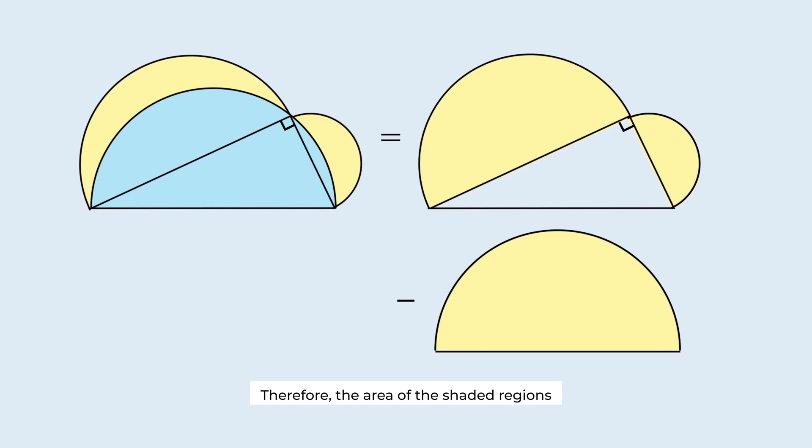Therefore, the area of the shaded regions is equal to the area of the right triangle.